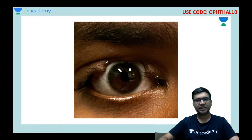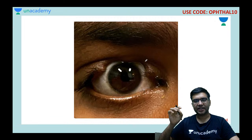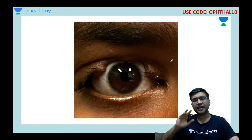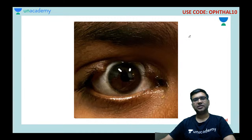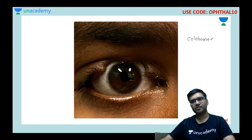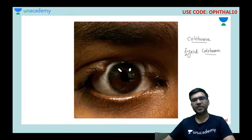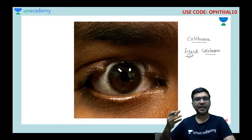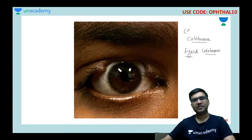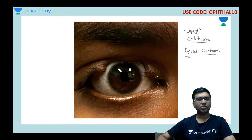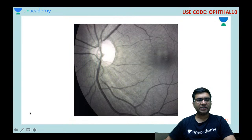In the next image, there is a defect in the central part of the upper lid. Whenever there is a defect anywhere in the eye, the word we use is coloboma. This patient is having an eyelid coloboma. Similarly, we can have fundus colobomas, optic nerve colobomas, and retinal colobomas. The word coloboma means defect.